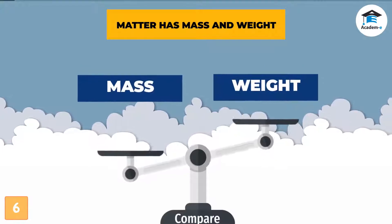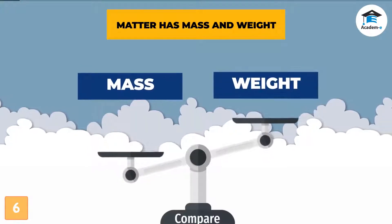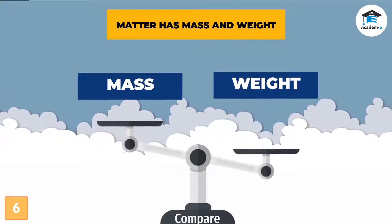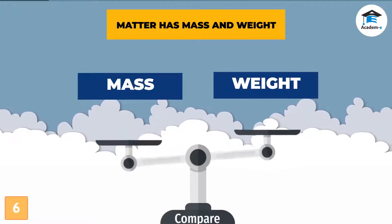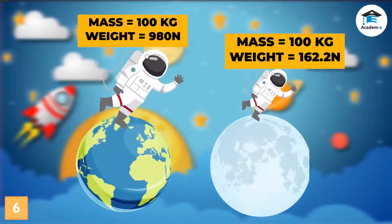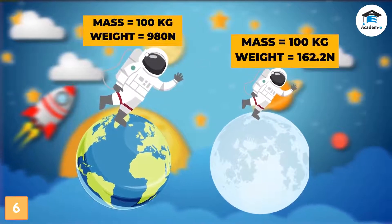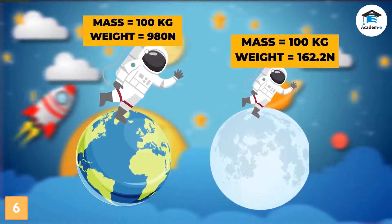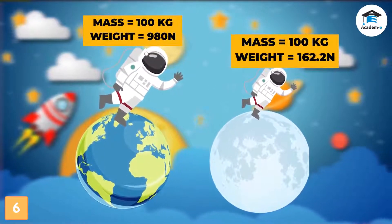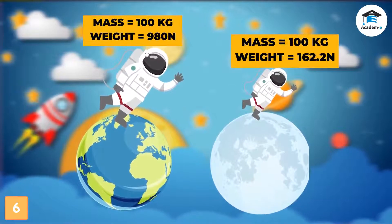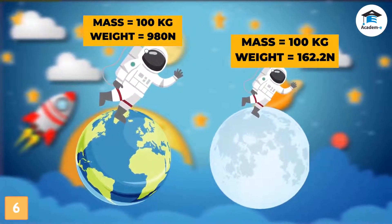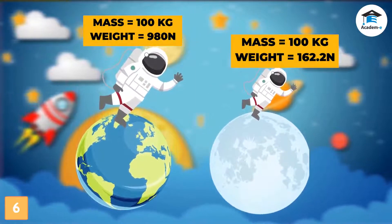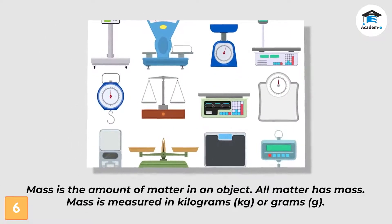Mass is the amount of matter in an object. Mass is not the same as weight — weight is affected by gravity, whereas mass is not. Your weight on Earth is different from your weight on the Moon because Earth and the Moon have different pulls of gravity. However, your mass will be the same wherever you are.